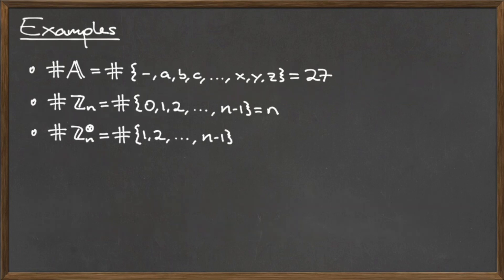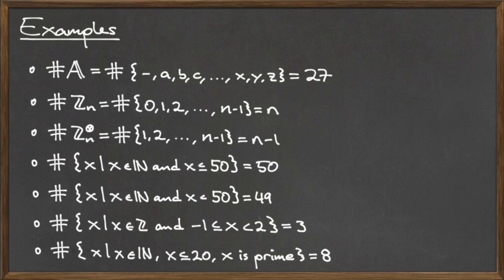On this slide, we present various sets and their associated cardinalities. Recall that the set blackboard A is the set containing the character space and the lowercase 26 letters of the alphabet. Since this set contains 27 elements, the cardinality of blackboard A is 27.